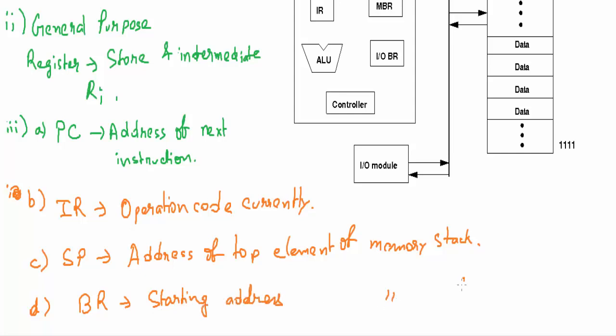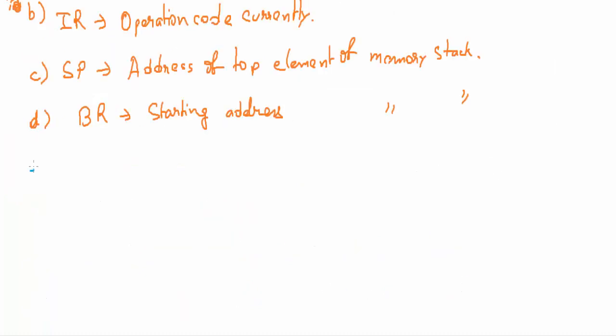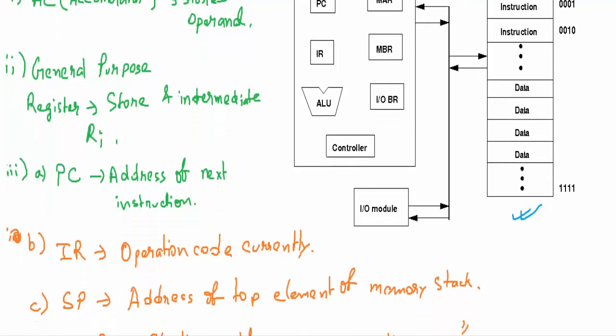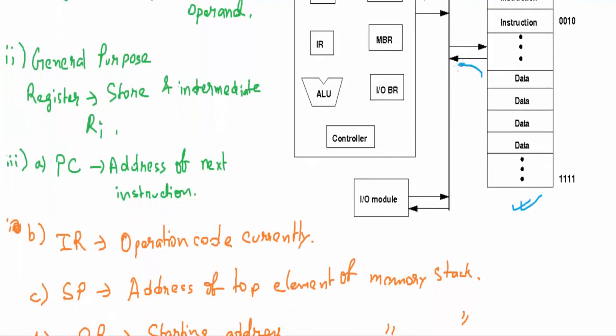Next we have MAR that is known as memory address register. It holds the address of the data that is to be retrieved from the main memory. Whatever the address of the data is to be stored, it is retrieved from here and then it goes here.